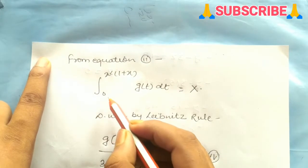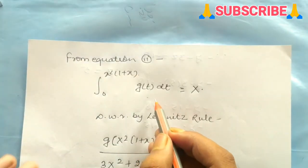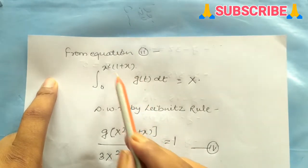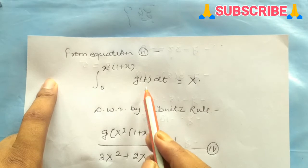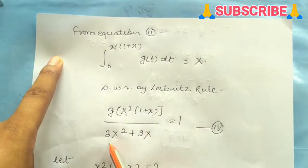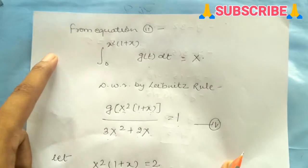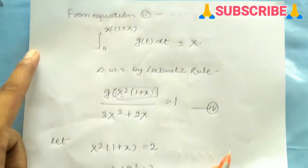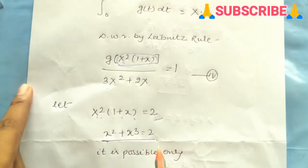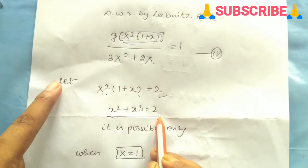Now, we need to find f(2). For equation 2, we have integral from 0 to x²(1+x) of g(t) dt equals x. We will solve this with the help of Leibniz rule. In Leibniz rule, after integration, we put the value here as x² multiplied by (1+x), and g appears. The differentiation: 3x² + 2x. Let x²(1+x) = 2.